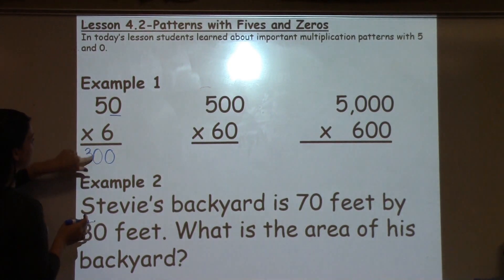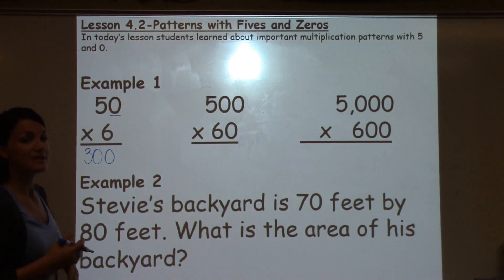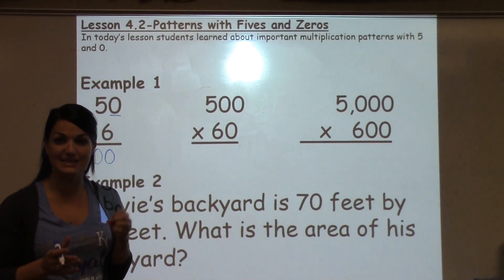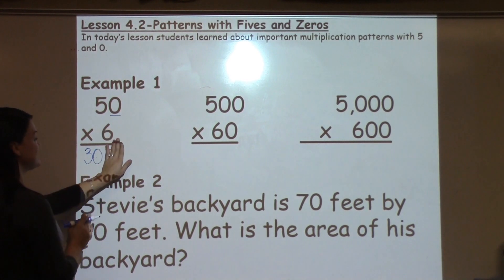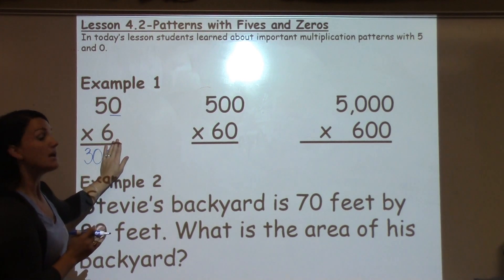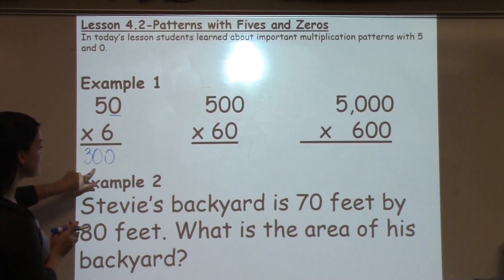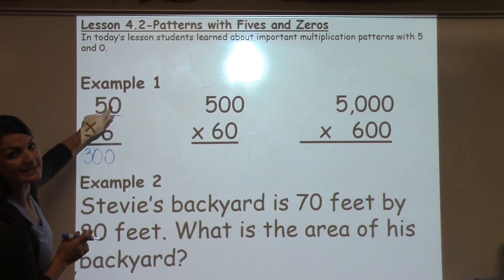Sometimes students get confused when working with 5s because a lot of 5 multiples end in 0. So then they sometimes think, oh I already added that 0 just by looking at 30. But really 5 times 6 is 30 and we still need to add that other 0.